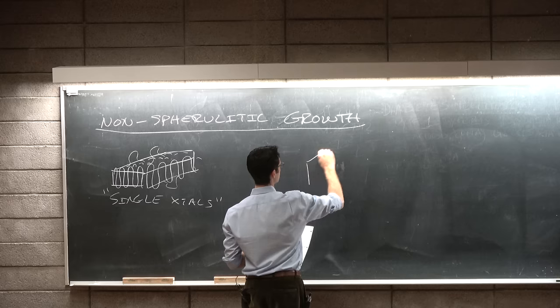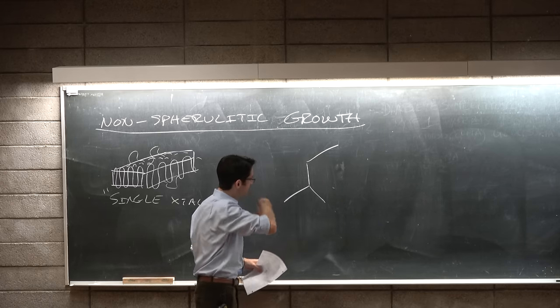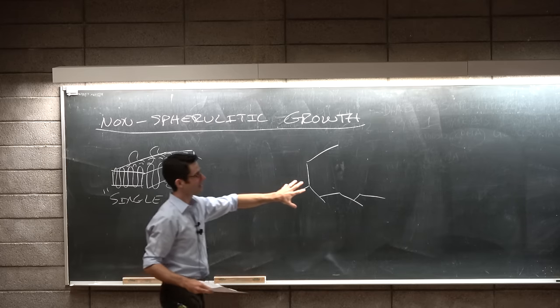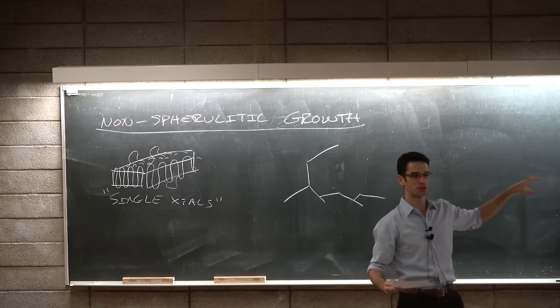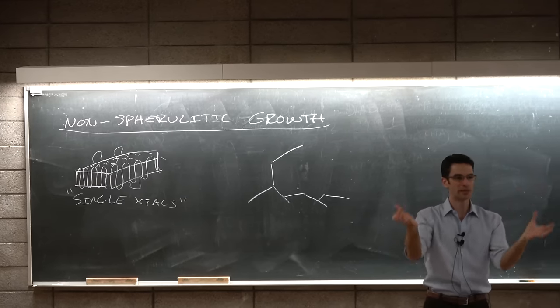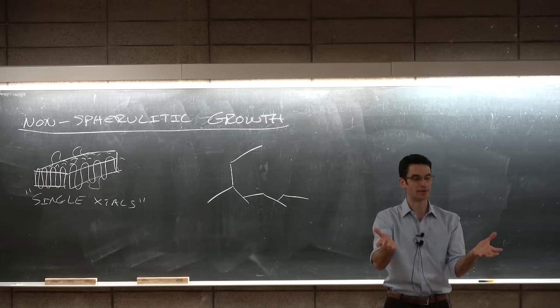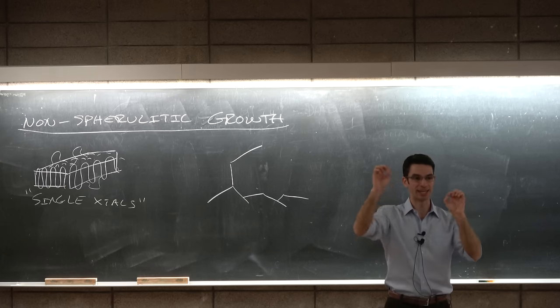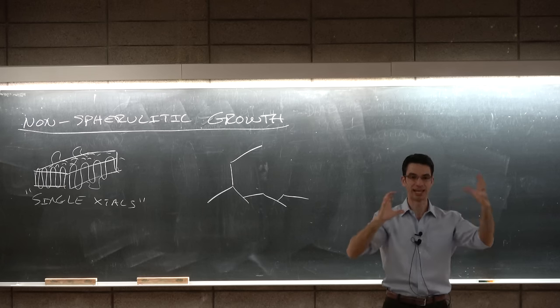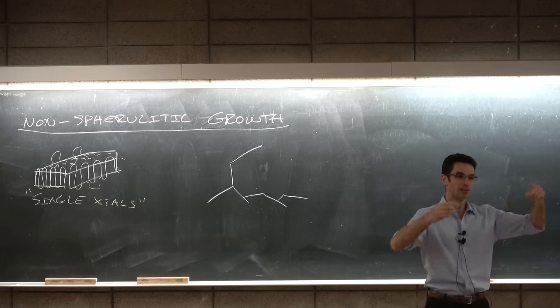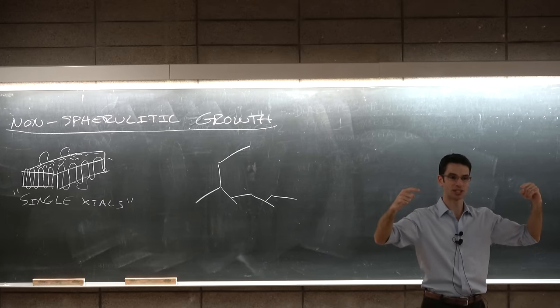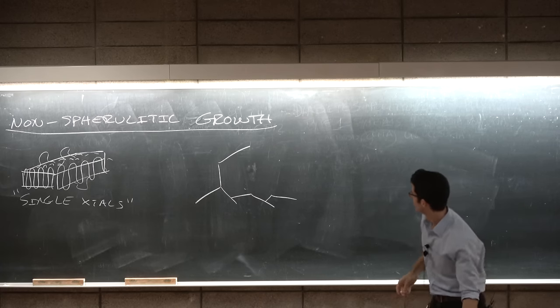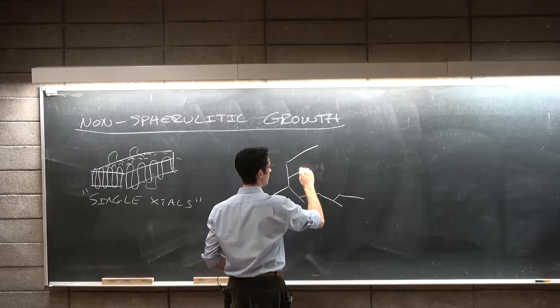An interesting structure that you can get under some circumstances is a dendrite, where instead of a process under thermodynamic control where the polymer chains add with equal probability anywhere, where the rate of growth is slow of any of the chain or any of the branch ends within a spherulite, if instead the molecules diffuse around and as soon as they see a growing crystalline facet, they add and they don't leave. They add, they don't leave. And this structure is called a dendrite.